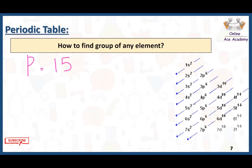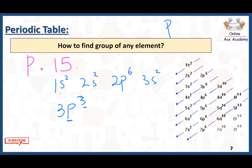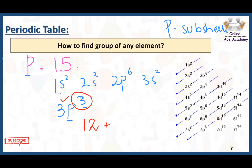For phosphorus, the atomic number is 15. Its electronic configuration is 1s2, 2s2, 2p6, 3s2, and 3p3. The valence electrons are present in the P subshell, so phosphorus belongs to P block. To find the group number for a P block element, we apply the formula: 12 plus the number of electrons in the P subshell. So 12 plus 3 equals 15 — phosphorus belongs to group number 15.